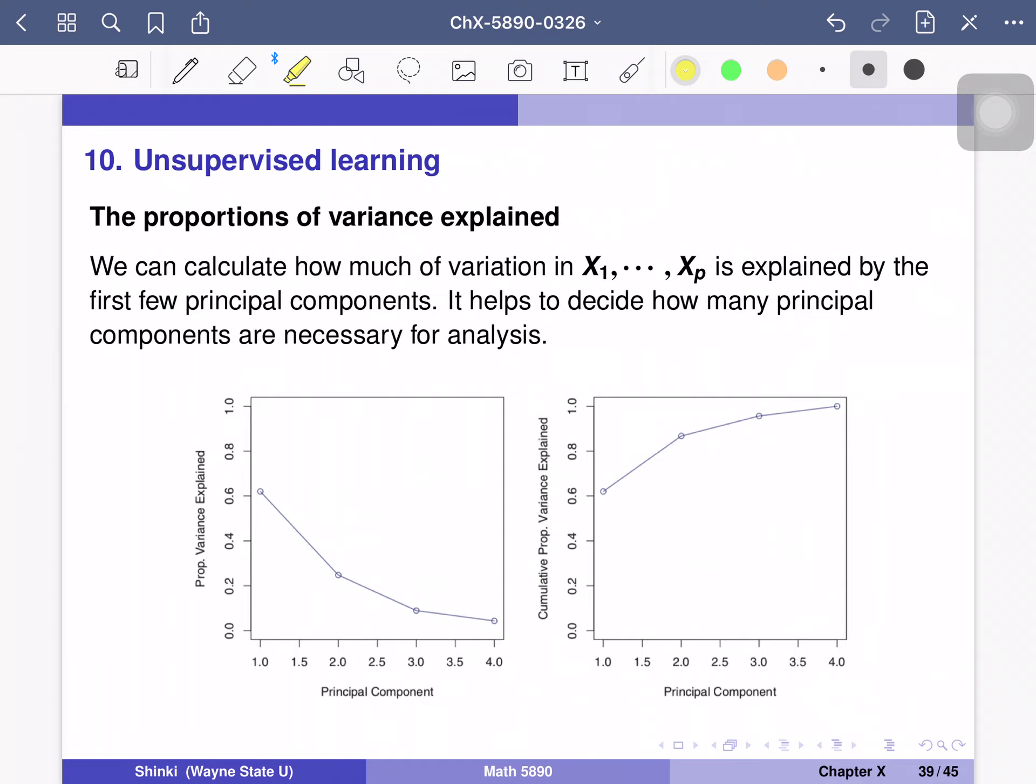For example, in this example, the first principal component includes 60% of variability in x1 to xp, and second component includes maybe a little more than 20% of variation. So this is cumulative contribution of factors. If we include first two factors, it includes almost 85 to 90% of information.